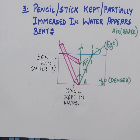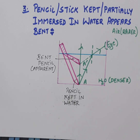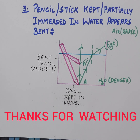This is how you explain the three applications of the refraction of light: first, the swimming pool or pond appears shallower; second, a coin kept in a glass of water appears raised; and third, a pencil or stick partially immersed in water appears bent. I hope you have understood how to draw the diagrams. We will meet in the next video to learn about refraction through the glass slab. Thank you for watching.